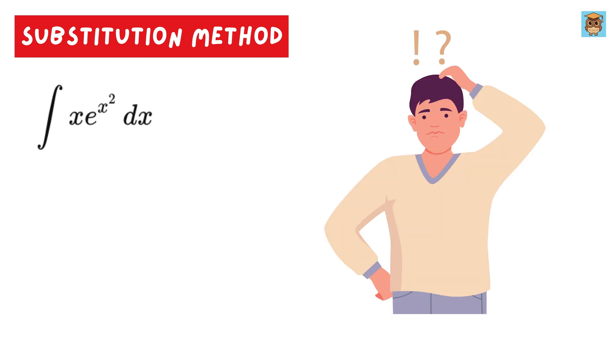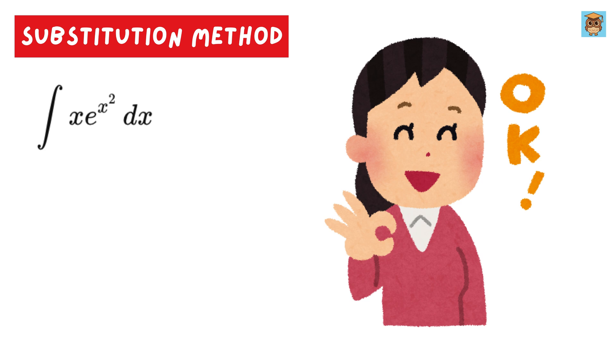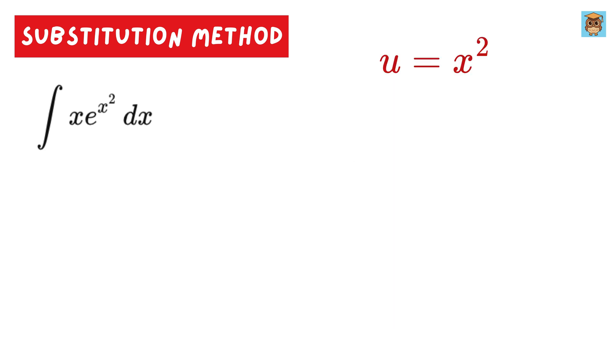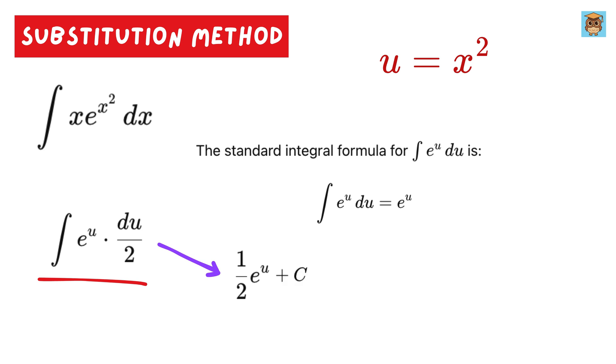Now let us solve this question. After seeing this question, you might scratch your head wondering where to even begin. But don't worry. Substitution will make it super simple. Let u equals x squared. So du over dx equals 2x. Thus, x times dx equals du over 2. So this x dx will become du over 2, and e to the x squared will become e to the u. Now this is super easy, right? Using the standard integral formula, we get this as e to the u over 2 plus c. Finally, let us substitute u here to get the final answer as e to the x squared over 2 plus c.